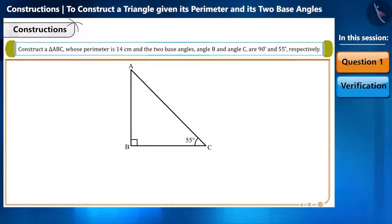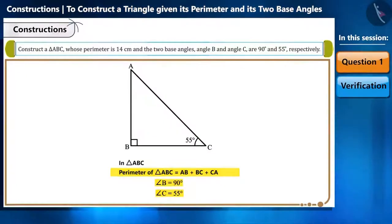In the question, the perimeter of the triangle is given to be 14 cm and we know that the perimeter of a triangle is equal to the sum of its sides. Hence, we have: 1. AB plus BC plus CA is equal to 14 cm, 2. Angle B is equal to 90 degrees, and 3. Angle C is 55 degrees.